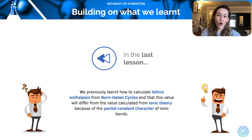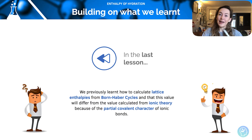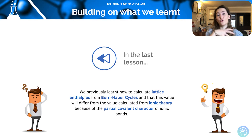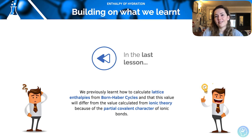Hi and welcome to this lesson on enthalpy of hydration. In the previous lesson we had a look at how to calculate lattice enthalpies from Born-Haber cycles, and the fact that this value differs a little bit from the theoretical value because the ionic theory has got a lot of assumptions in it. Actually, often these ionic lattices have got a partial covalent character, and we need to be able to explain those.